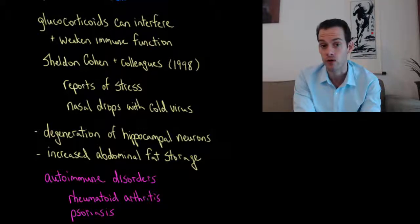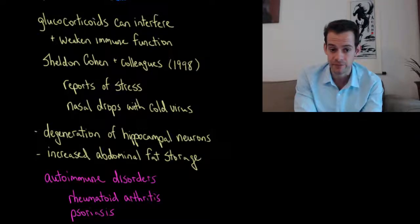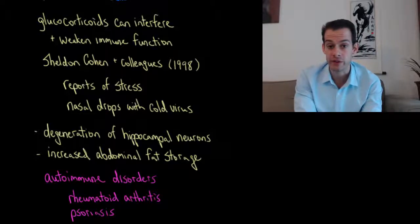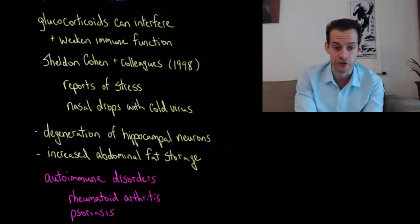Now we can also see that glucocorticoids are associated with degeneration of neurons in the hippocampus. And they're associated with greater fat storage. And in particular, storage of fat in the abdomen. And this is something we'll come back to in a future video.